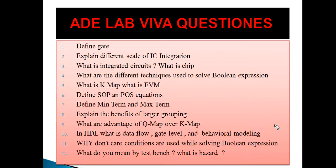Why are don't care conditions used while solving Boolean expressions? Sometimes in the truth table, for certain input conditions there is no output — such conditions are called don't care conditions. We represent them using X, and while solving Boolean expressions you can use them as either one or zero depending on the situation.